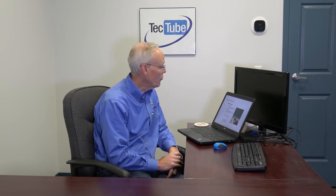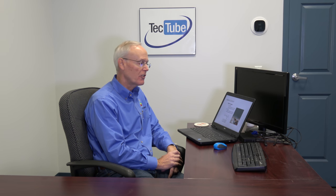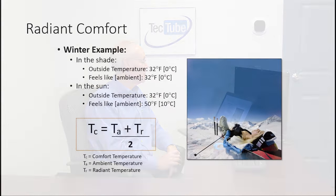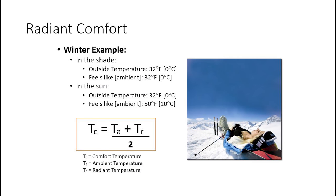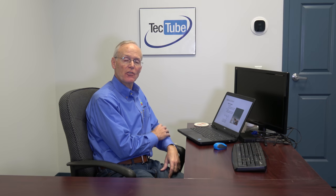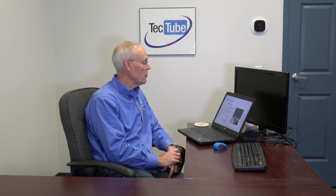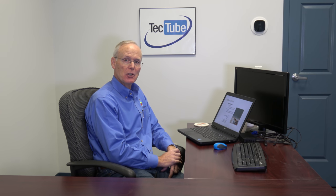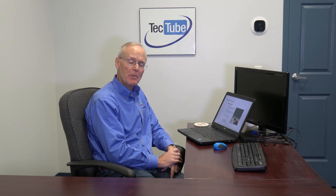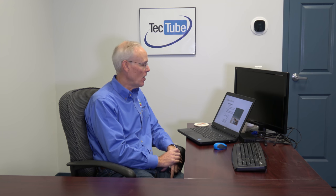One of the new formulas or concepts I'm going to introduce is the concept of comfort temperature. We all know that infrared works off of heating things instead of air. You have an ambient temperature — that's the TA — and then you also have a radiant temperature, which is what it feels like on your skin. The average of those two equals comfort temperature. I want you to remember this formula because it comes into play a little bit later on.